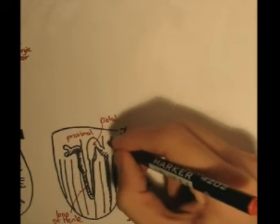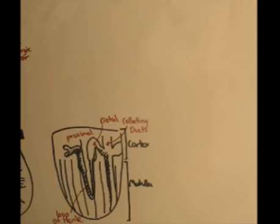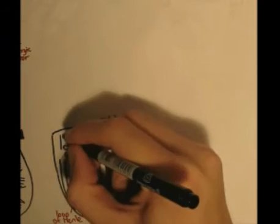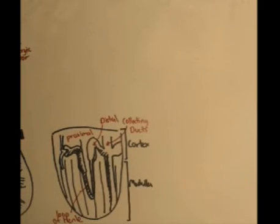And then the urine goes out the collecting ducts. Now Bowman's capsule is where the nephron receives and begins regulating water and soluble substances before being excreted as urine.